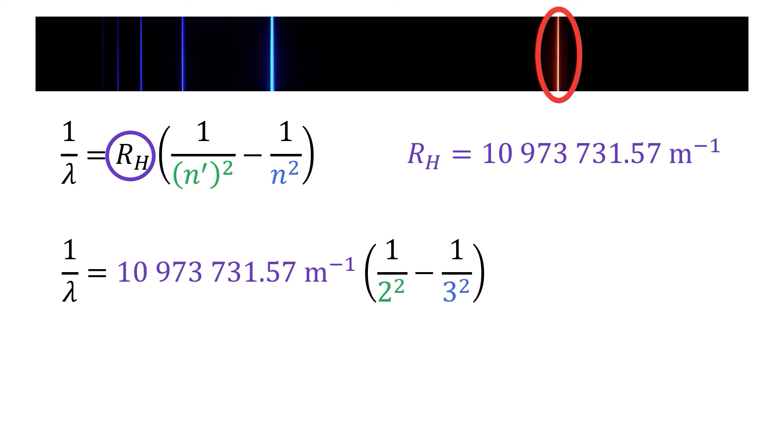n is equal to 3 because we want the first or alpha line in the Balmer series. This then gives a value of 1.52 times 10 to the 6 reciprocal meters for 1 over the wavelength, which gives a value of 658 nanometers for the wavelength of the n equals 3 to n equals 2 transition, which is the correct value of the first line in the Balmer series.